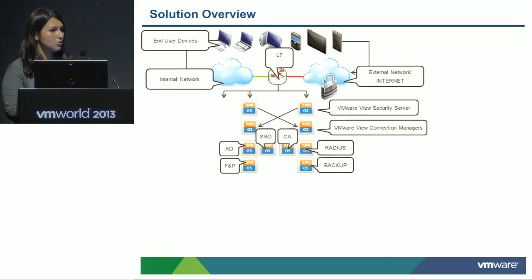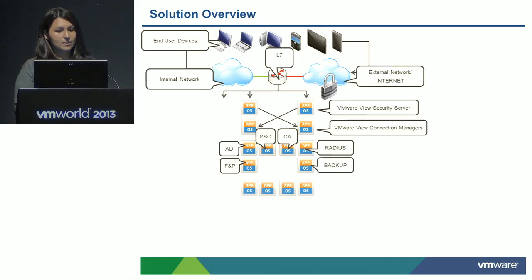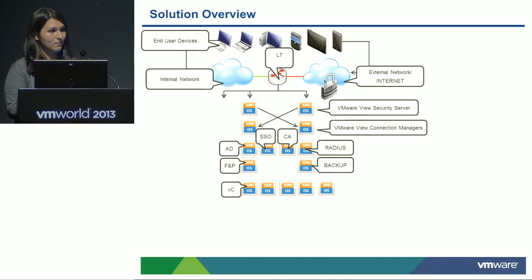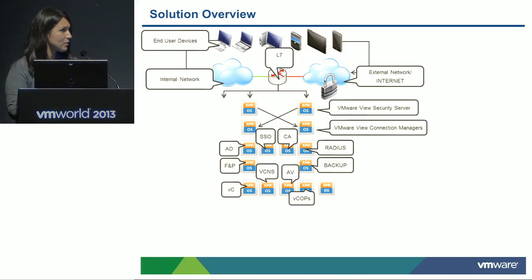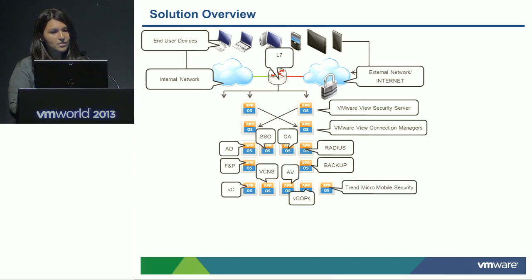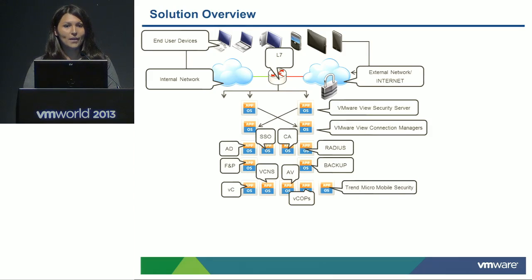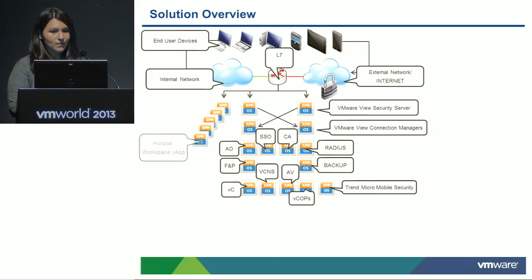We want a file and print server, which handles all of our ThinApps and persona data. Backup is also a portion of the solution if you'd like to have it set up. Here we fit the common vSphere portions such as vCenter, vCNS or now NSX, vCOPS for monitoring, and AV, which lends itself greatly to Trend Micro. In this solution we are adding Trend Micro Mobile Security, and we'll talk about how that fits in to enhance security for our devices. And, of course, Horizon Workspace — this is a new piece of validation we've done from last year to this year.